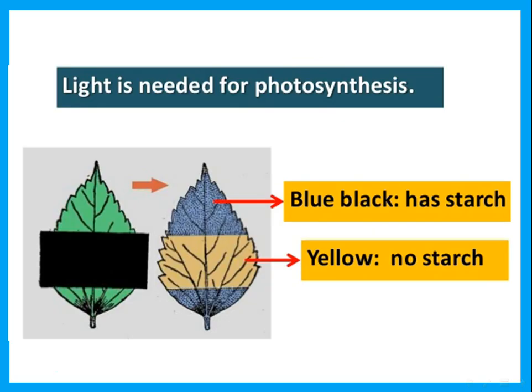We can get a leaf and cover part of it with a black cover. The part that is covered will not be able to do photosynthesis because it will have no light — when tested with iodine solution, the iodine solution remains yellow or reddish-brown. The part that was not covered will do photosynthesis, and when tested with iodine solution it turns blue-black due to the presence of starch.